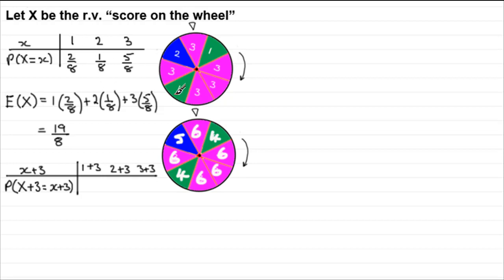Now, what about the probabilities of each of these scores? Well, they don't change. They don't change from the values you've got up here. Getting a 1 was 2 out of 8. Now the probability of getting a 4 is still going to be 2 out of 8. And the same is going to apply with getting a 5, the 2 plus 3, it's going to be 1 eighth. And getting a 6 is the same as we have for 3, 5 eighths.